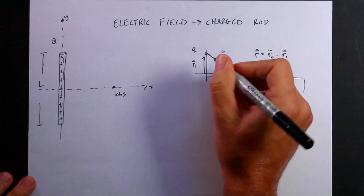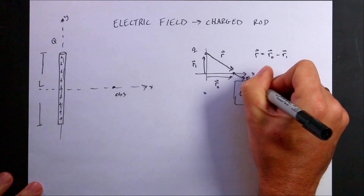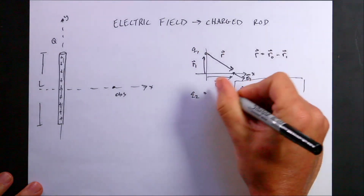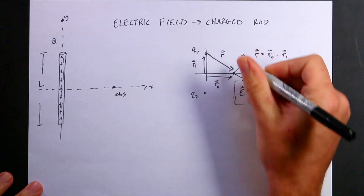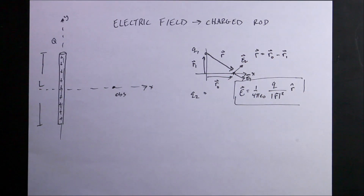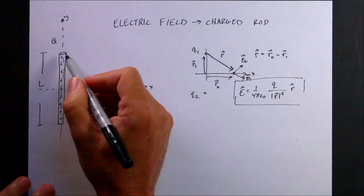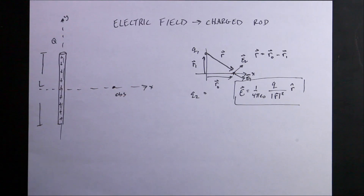What if I have more than one charge? Each charge makes its own electric field, and the total is the sum of all of them. I don't know how to calculate the electric field due to a rod directly, but I do know how to calculate it due to a whole bunch of point charges. So I'm going to break this rod into a whole bunch of point charges and calculate the electric field due to each piece.